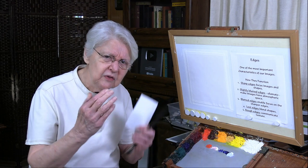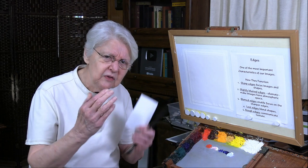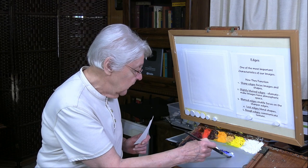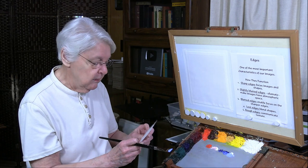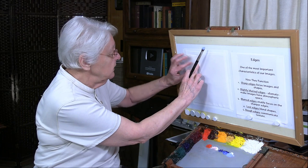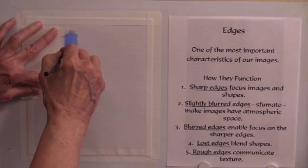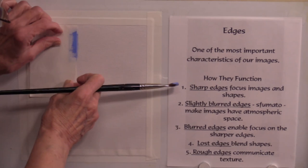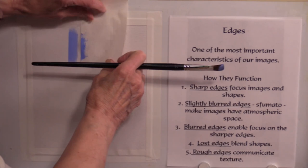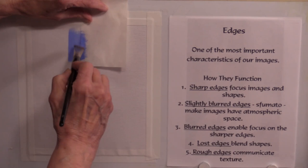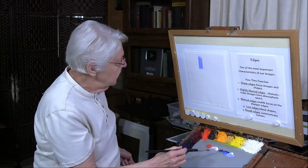Sharp edges focus the images and shapes. If all the edges are sharp, the whole thing is going to be in focus. Let's look at what a sharp edge looks like. I'll just use some paint here and make the sharpest edge I know how to make — just using a stencil like this. You can make a sharp edge with a brush or a palette knife, but I want to use this stencil to be sure this edge is just as sharp as I can make it. You can already see how clear and crisp that is.